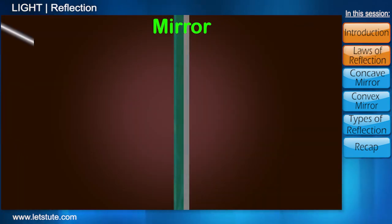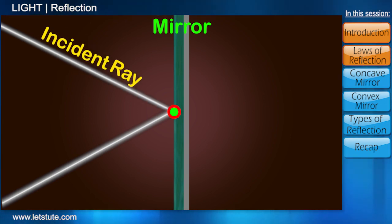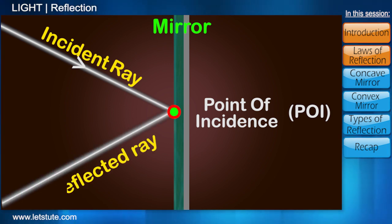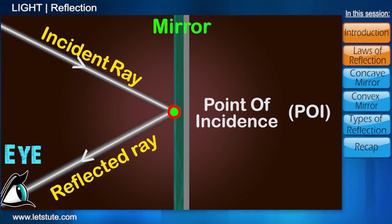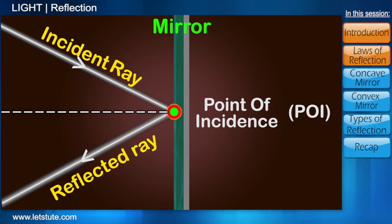Suppose there's a ray incident at some point on the mirror. As it is incoming or incident onto the mirror, this ray is called the incident ray. The point or spot at which the incident ray strikes the mirror is called the point of incidence. It is at this point too that the incident ray bounces off the mirror surface and is now called the reflected ray — it is this ray that meets our eyes and which we interpret as an image. Let's now imagine a perpendicular line to be formed at the point of incidence, called the normal.